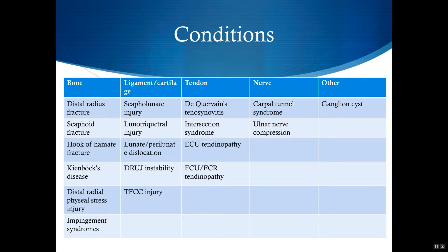We'll start with bone injuries and cover distal radius fractures, scaphoid fractures, hook of hamate fracture, Kienböck's disease, distal radial physeal stress injury, and impingement syndromes. Then we'll move on to ligaments and cartilage and cover scapholunate injuries, lunotriquetral injuries, lunate and perilunate dislocation, distal radioulnar joint instability, and triangular fibrocartilaginous complex injury.